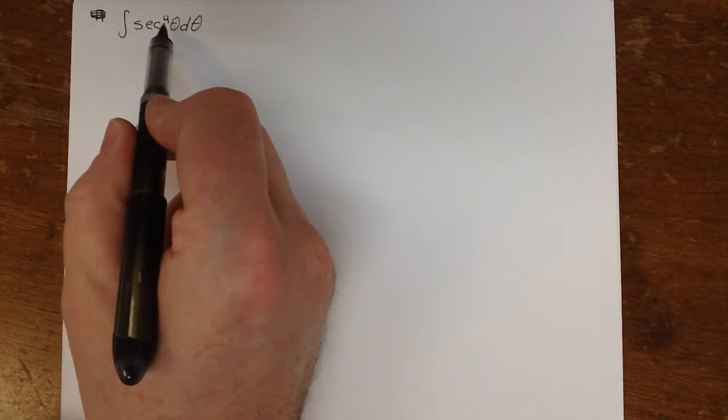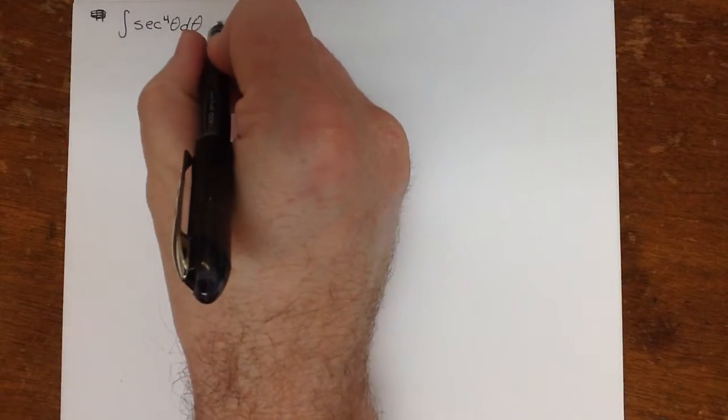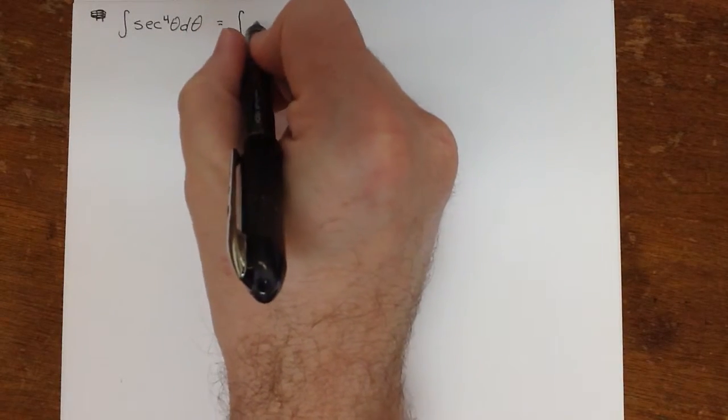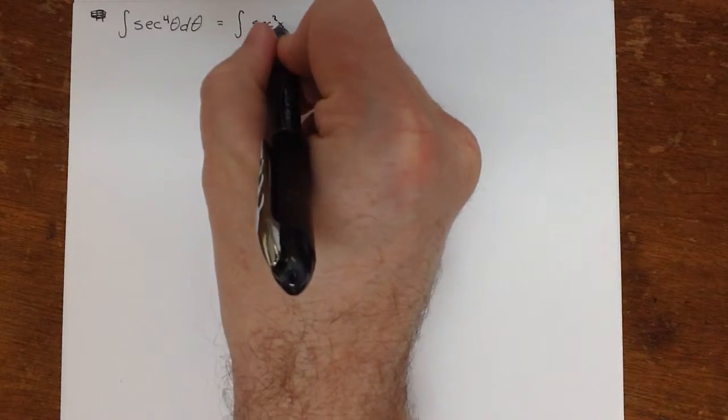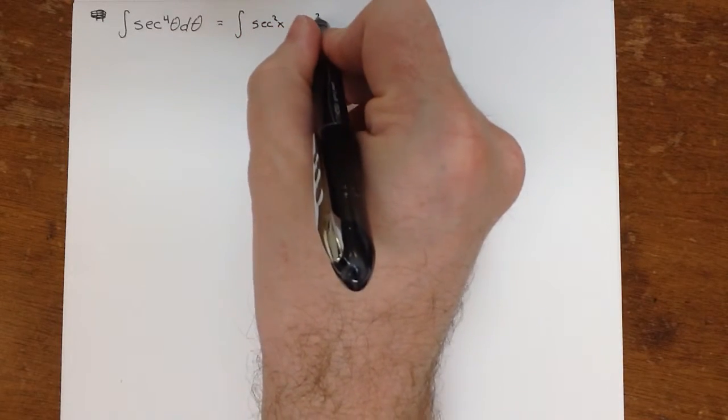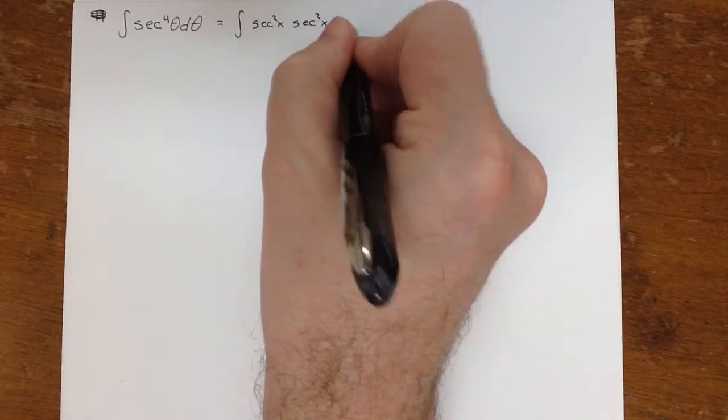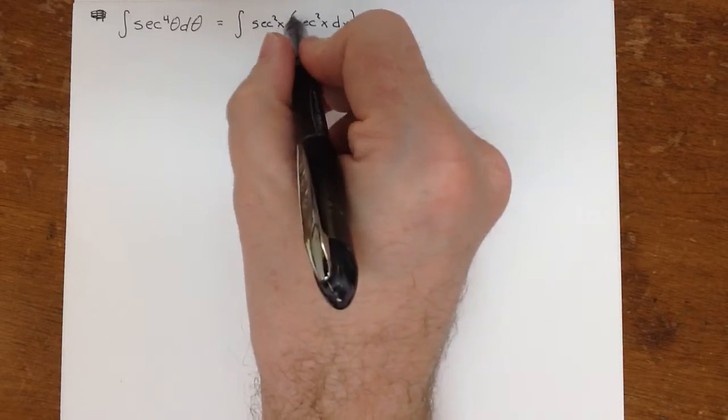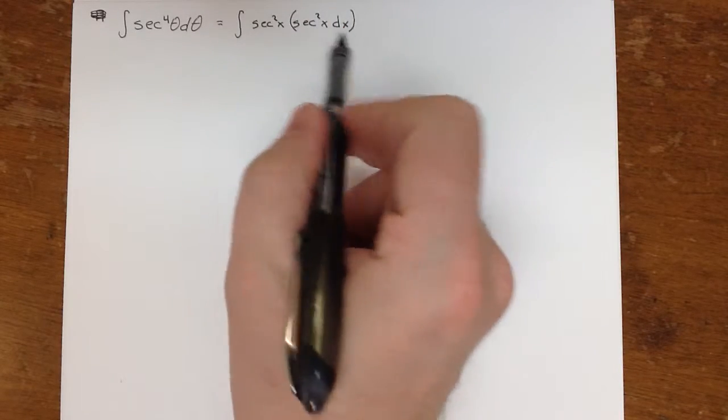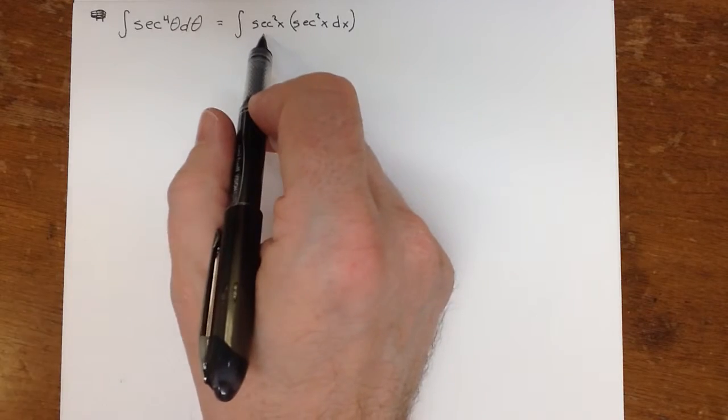To do the integral of secant to the 4th, since this is secant to an even power, what I want to do is pull out secant squared. And the idea is this is going to be my du. So I need to rewrite this in terms of tangent.